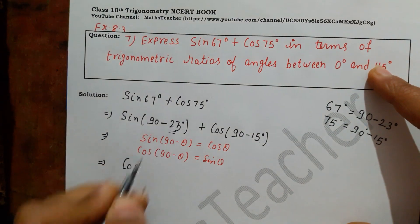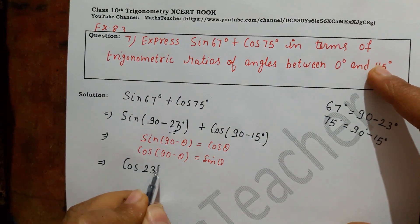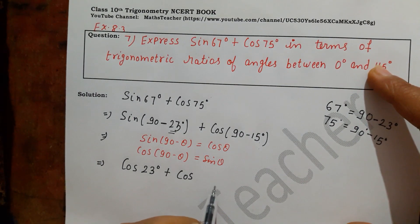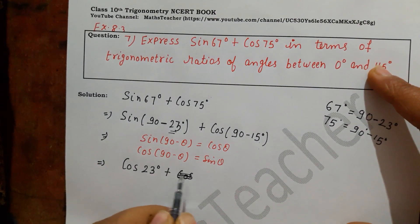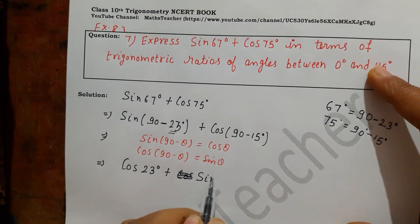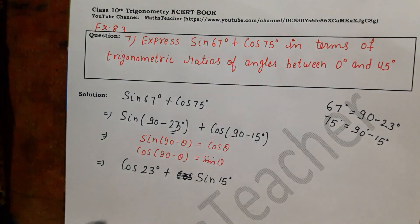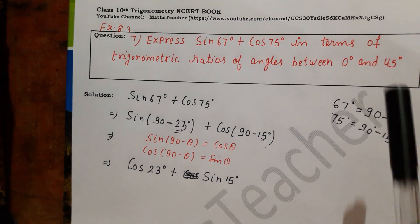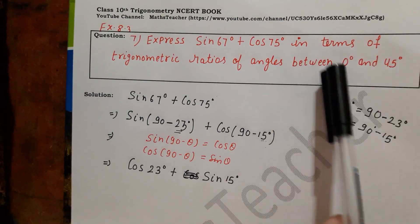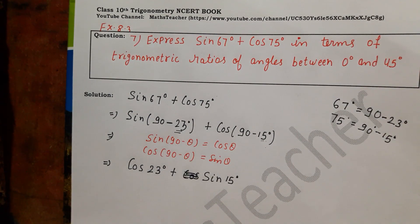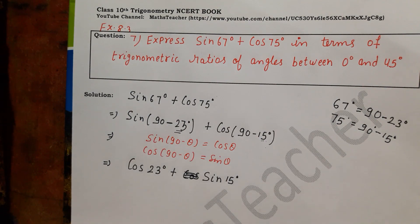Applying the formulas: sin(90° − θ) gives cos θ, where θ is 23°, so we get cos 23°. And cos(90° − θ) gives sin θ, where θ is 15°, so we get sin 15°. As we can see, both angles — 23° and 15° — are between 0° and 45°, so the question is solved.